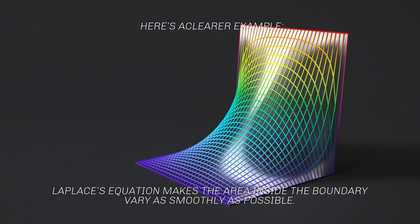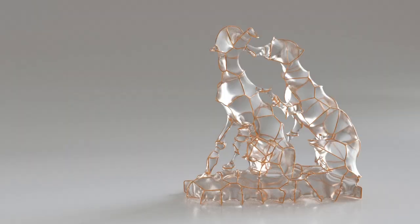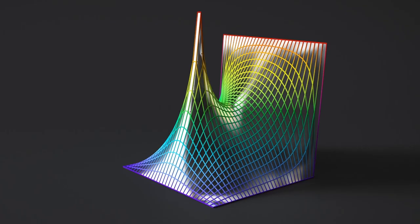In summary, Laplace's equation makes the area inside the boundary vary as smoothly as possible. In Houdini 19, we now have a very easy-to-use Poisson solver which can solve Laplace's equation — which I used to create a sculpture of minimal glass surfaces spanning between metal wires forming docks. Laplace's equation can also be modified into the Poisson equation, where we can drive how values of adjacent points within the boundary vary — but that's a topic for another talk.